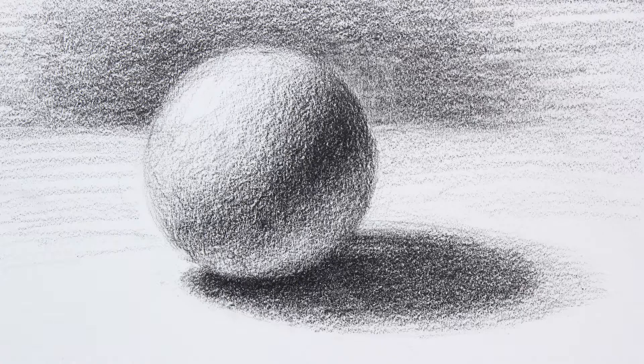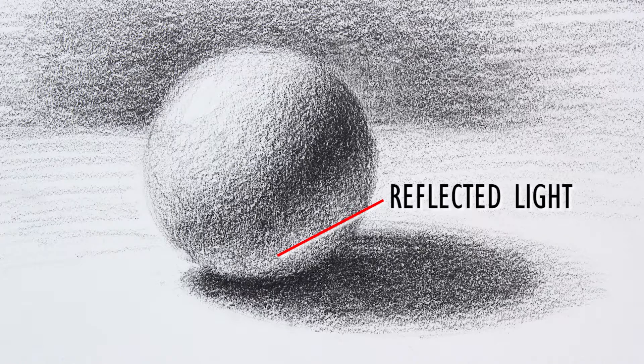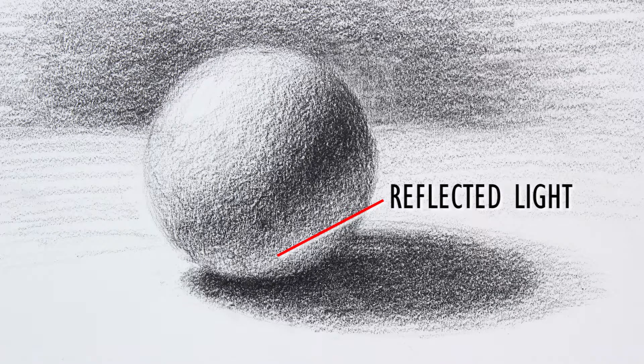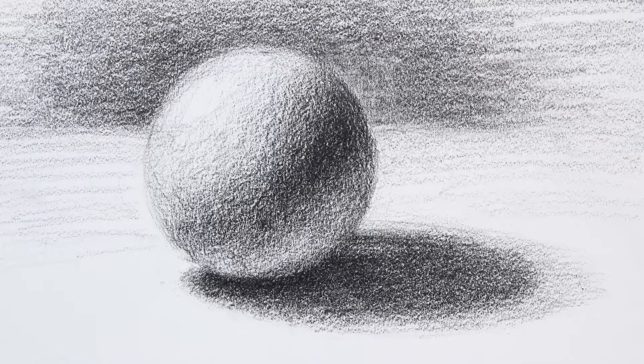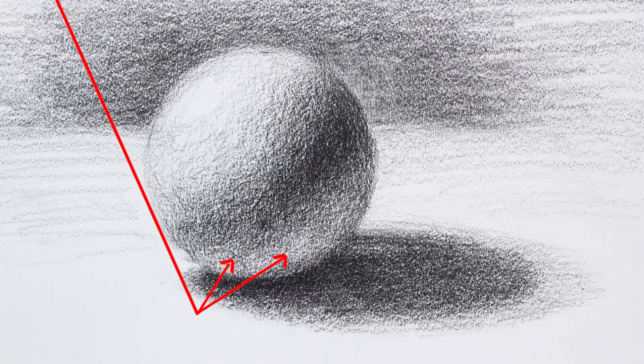This core shadow occurs because of something called reflected light. Notice how the bottom edge of the sphere appears lighter than the core shadow. This is because some of the light from our light source travels past the edge of the form, then bounces off the table and back into the bottom of the sphere, creating a glowing effect.